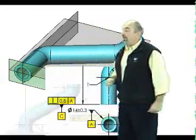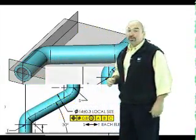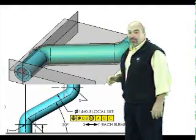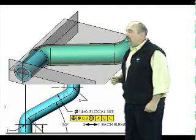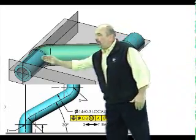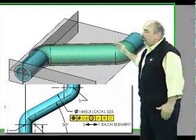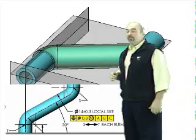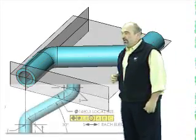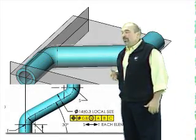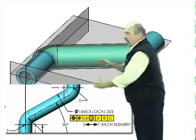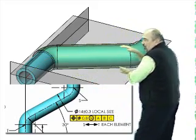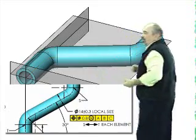Together these three planes establish your origins of measurement. The rest of the tube is controlled by the position tolerance applied to each element between points S and T. Each element or slice must be within .8 millimeters of its basic location if it's made at its largest size or maximum material condition. Together these slices define a boundary that the surface of the tube may not go outside of.